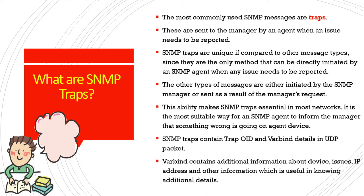An SNMP trap contains the trap OID and varbind details in UDP packet format. UDP is a protocol where no acknowledgement is received — the packet is transferred and the sender doesn't wait for confirmation. Varbinds are fields containing additional information such as the device's IP address and other details useful for understanding the issue.